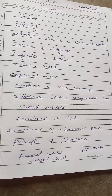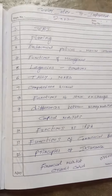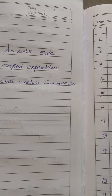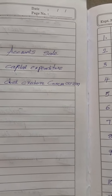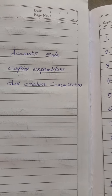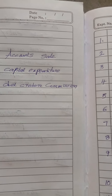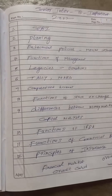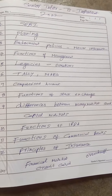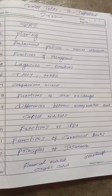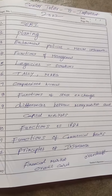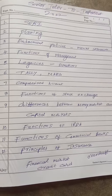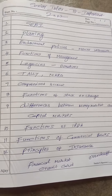Then financial markets and credit cards — these will be given for short answers, and account sales will be expected this time. Then capital expenditure — what is the meaning of capital expenditure? Then directly commission, and one short question on calculation of new profit sharing ratio. One short question is also expected from receipts and payments account.